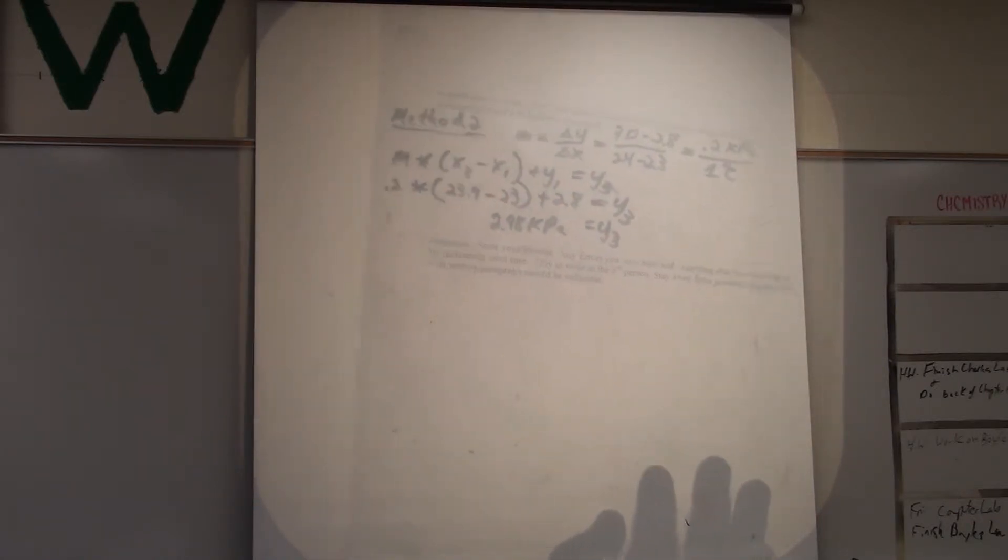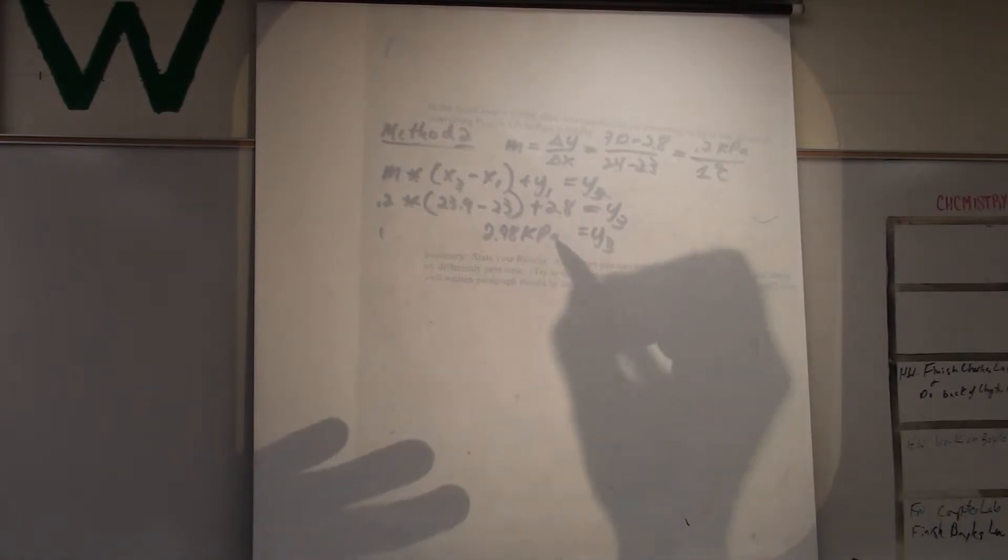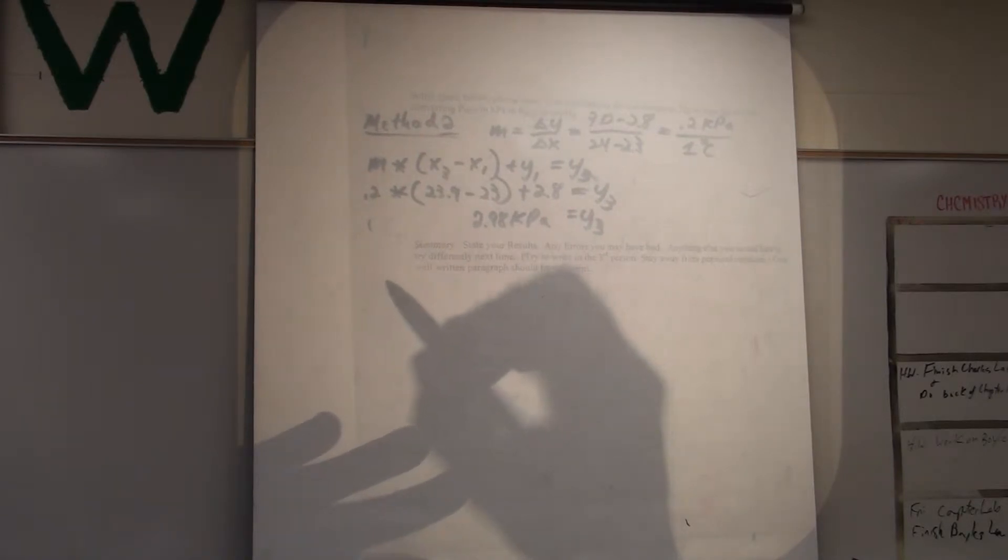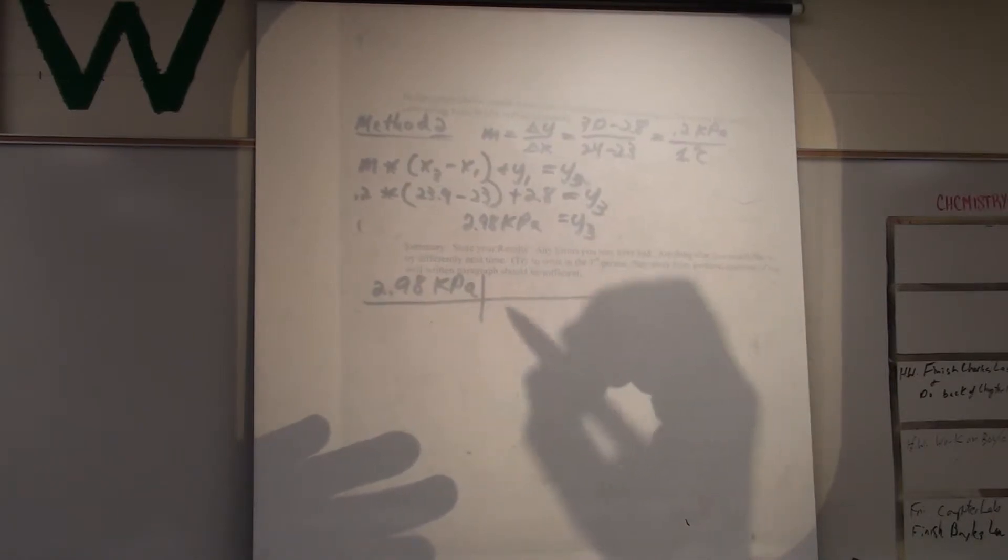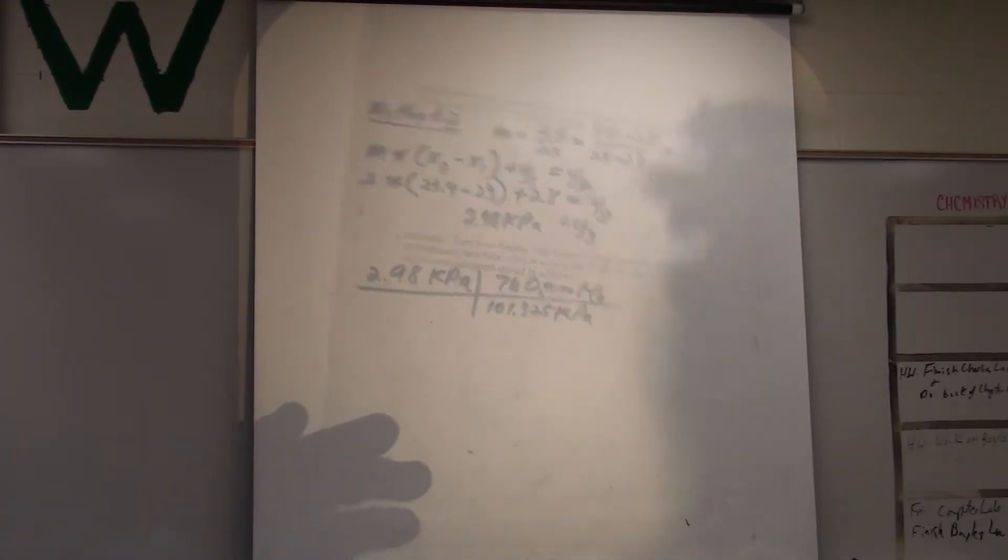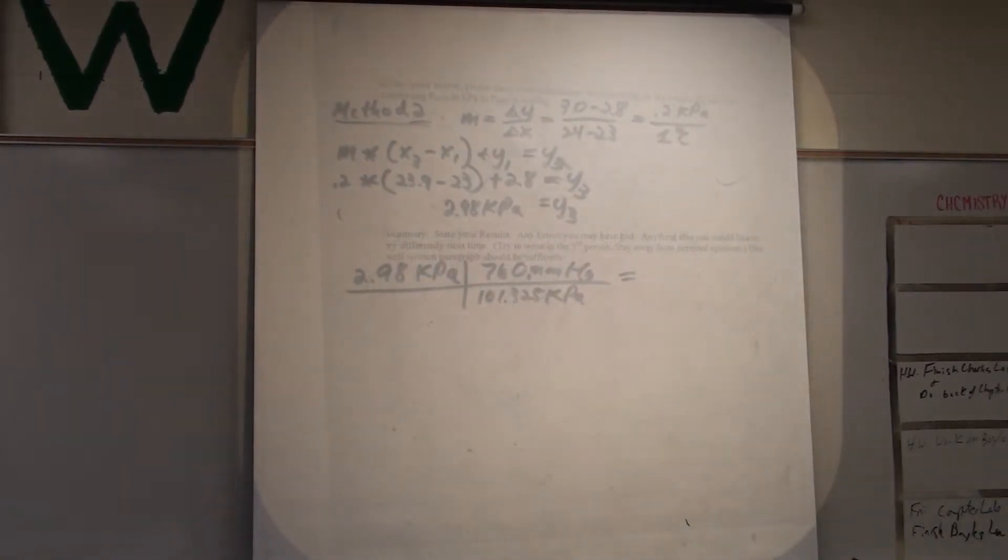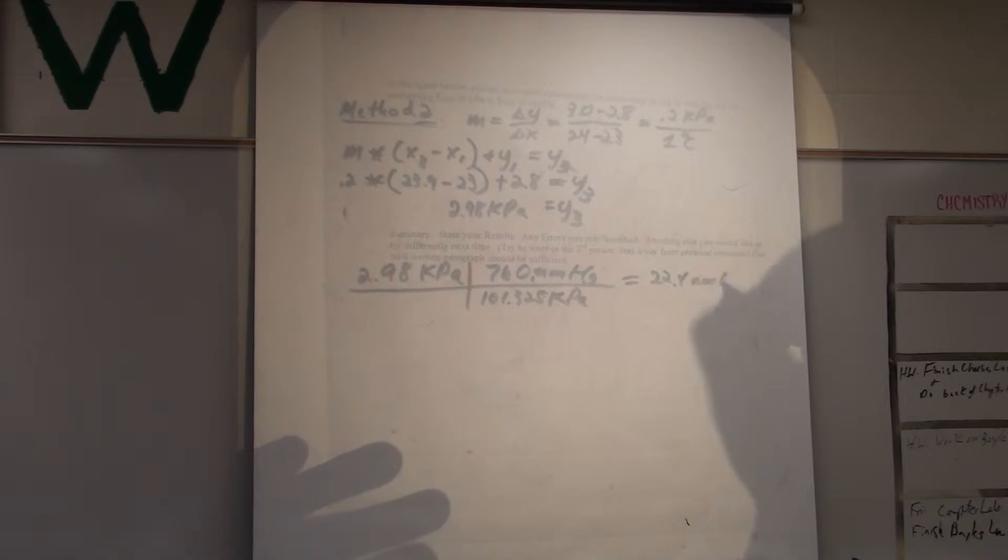All right, but the fun's not done. Because this is in kPa. We need it in millimeters of mercury. So, we're running out of room. 2.98 kPa convert to millimeters of mercury. 101.325 kPa is equal to 760 millimeters of mercury. That's just a conversion factor that I get from my appendices or you can memorize it. 22.4 millimeters of mercury.